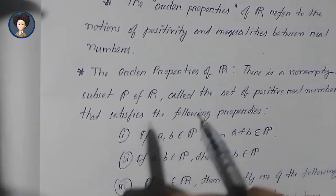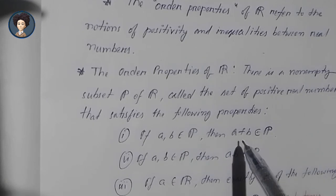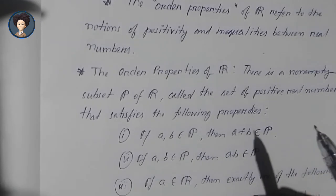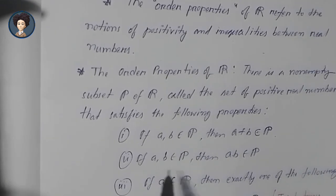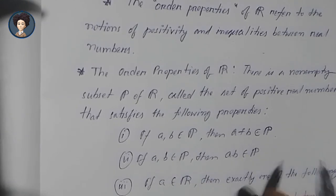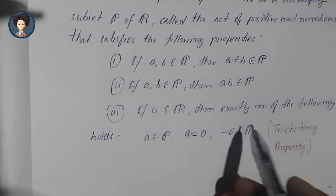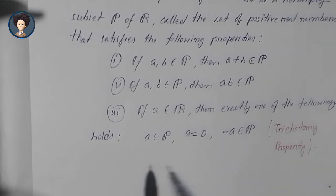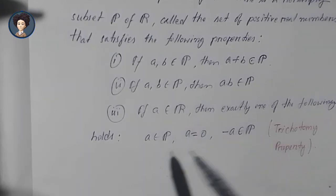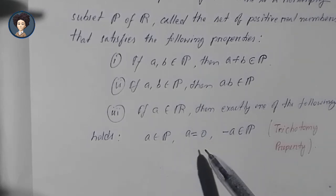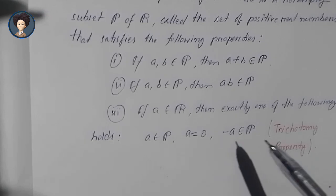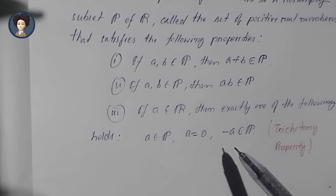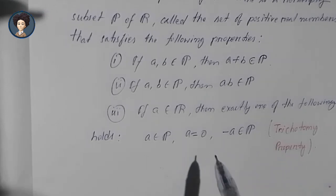The order properties satisfy the following: first, if A and B belong to P, then A plus B also belongs to P. Second, if A and B belong to P, then their product also belongs to P. Third, if A belongs to ℝ, then exactly one holds: A belongs to P, or A equals zero, or minus A belongs to P.